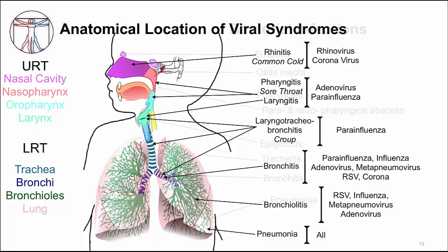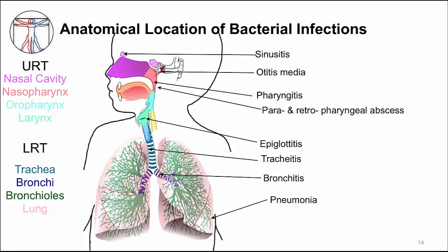Sometimes respiratory viral infections can be complicated by secondary bacterial infections. The same anatomic locations that I showed you for respiratory virus infections can also manifest clinical syndromes due to bacterial infection. For example, a viral rhinitis can be complicated by a bacterial infection of the sinus causing sinusitis. Some of these clinical syndromes can be bacterial infections without a preceding viral infection — for example, strep throat is a pharyngitis caused by Streptococcus pyogenes, and Bordetella pertussis can cause bronchitis. Different from respiratory viral infections, bacterial infections of the upper and lower respiratory tract need to be treated with antibiotics. These bacterial infections will be discussed in depth in other modules.